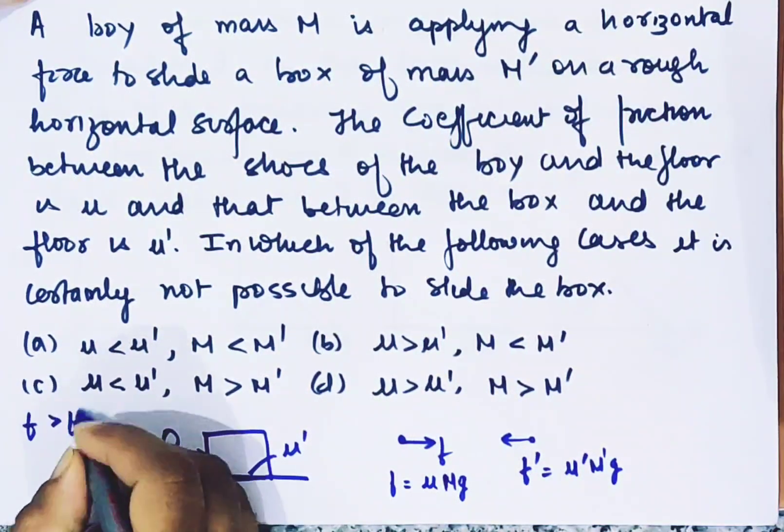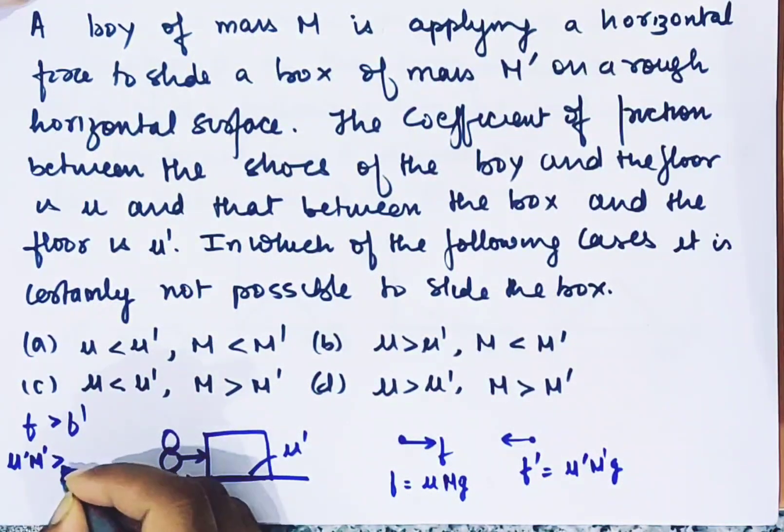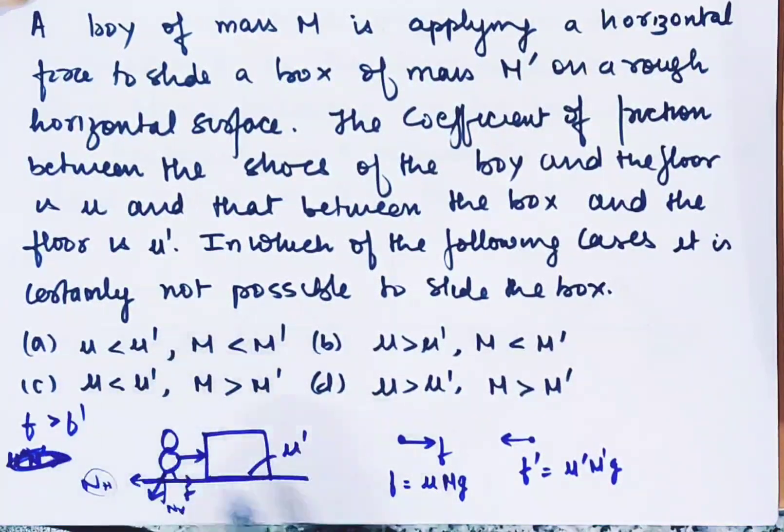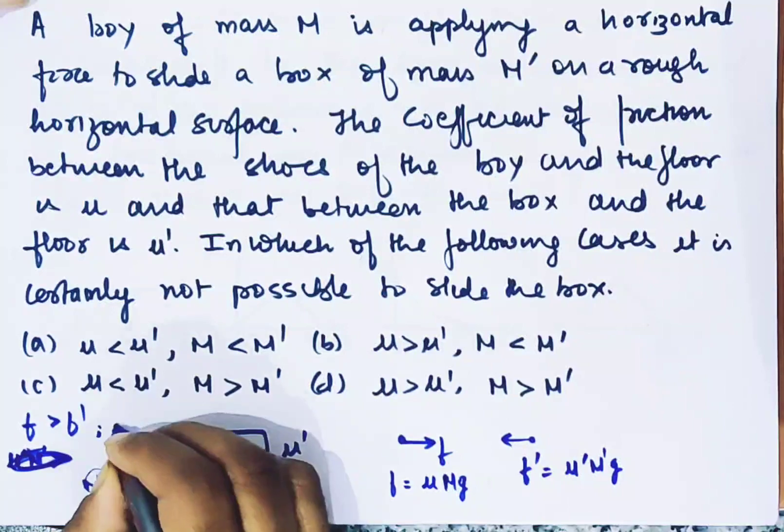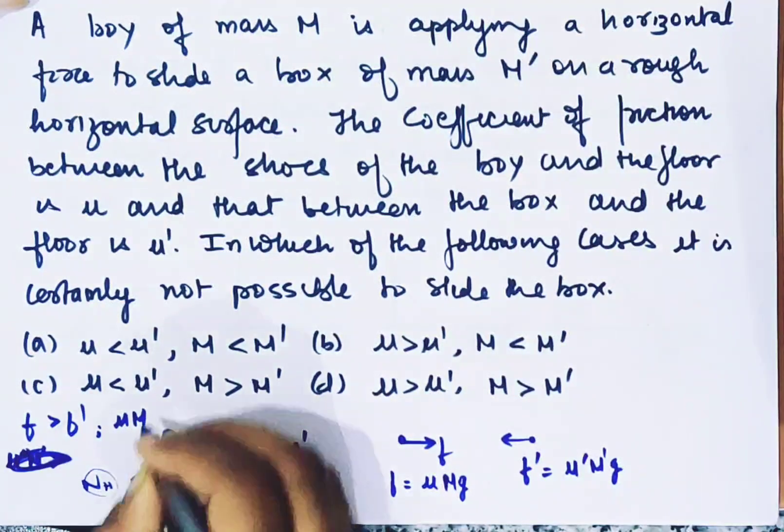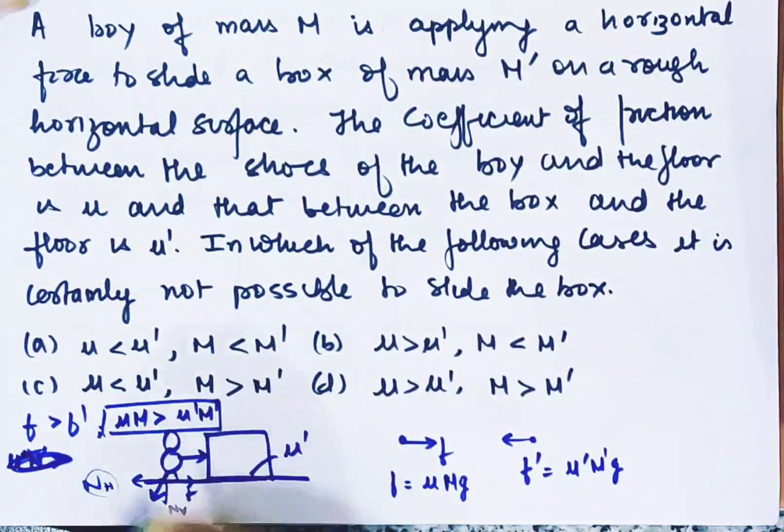So F should be greater than F'. That means μmg should be greater than μ'm'g. This is the condition for sliding the box.